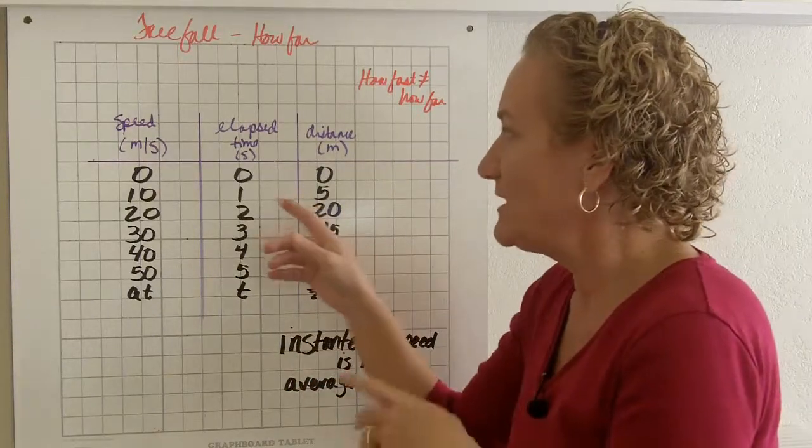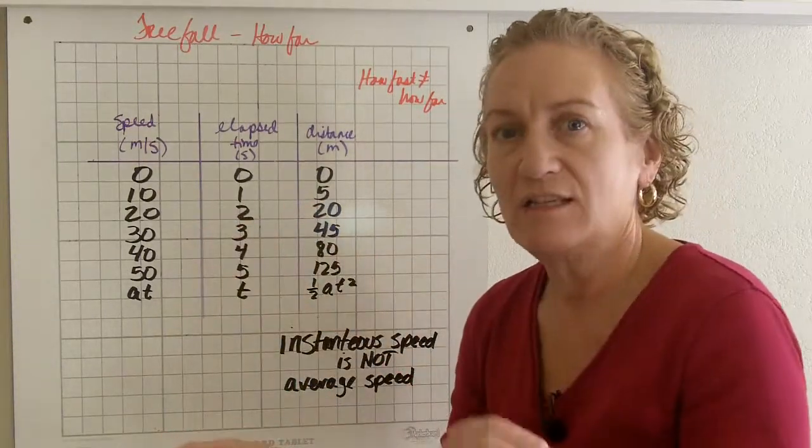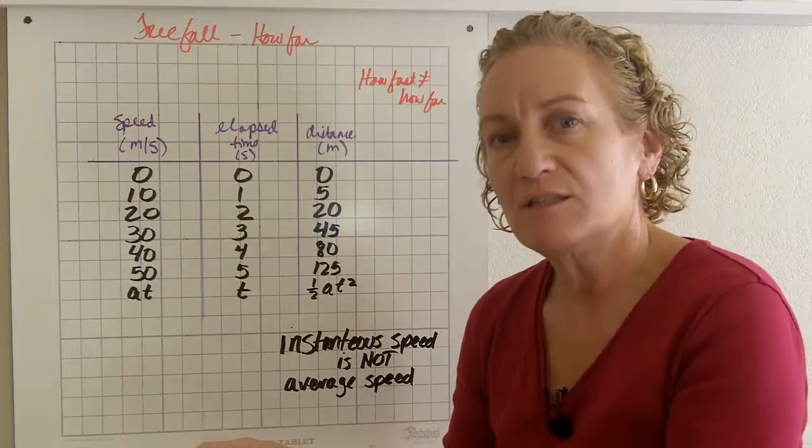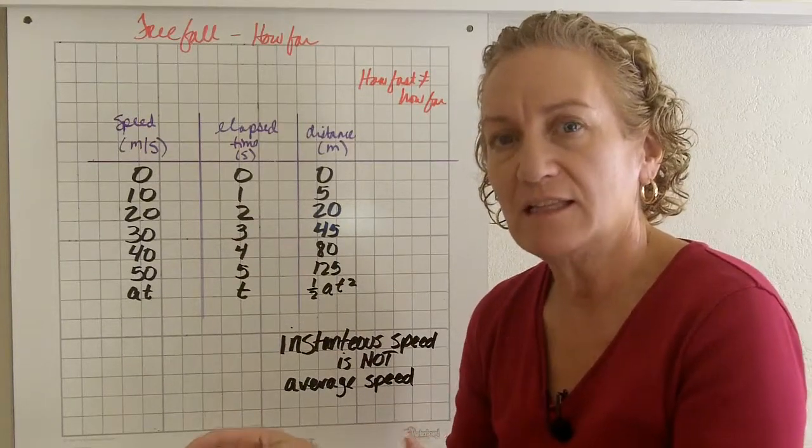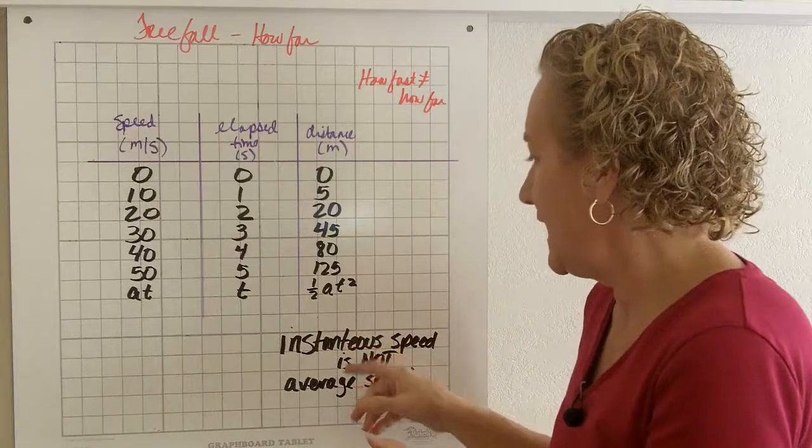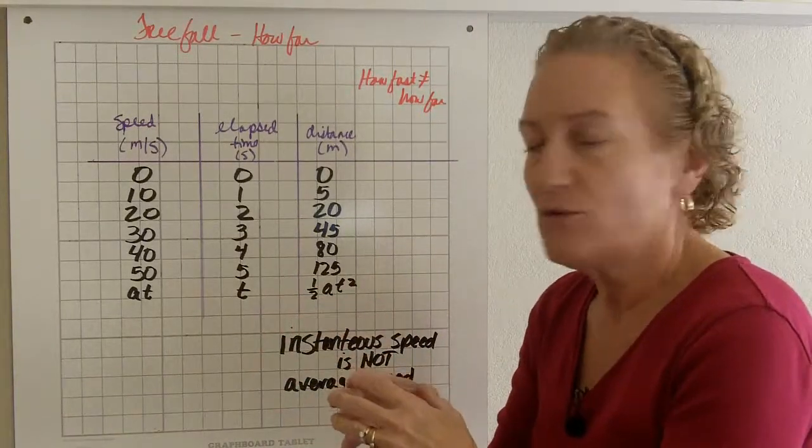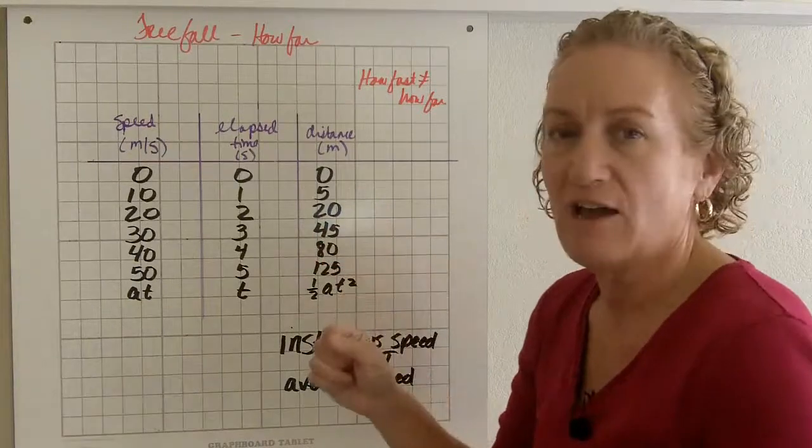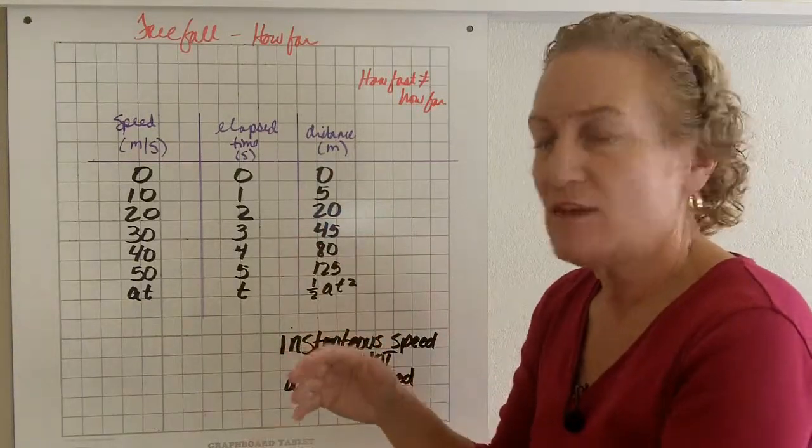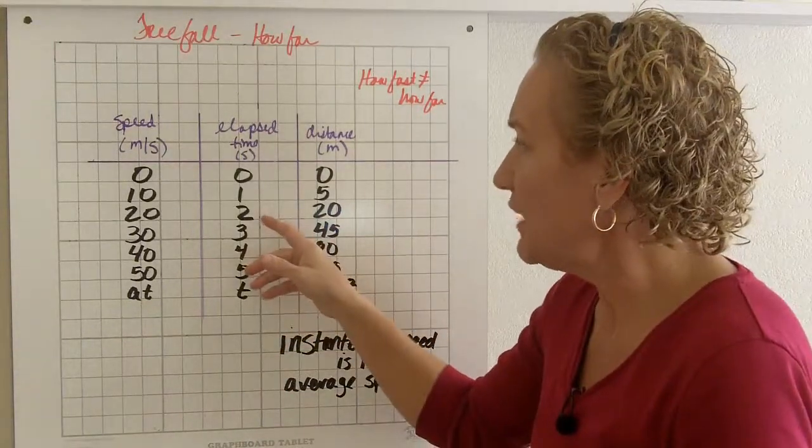But remember that at one second, 10 meters per second is her instantaneous speed. It's the speed that she's going in that tiny little instant of time. And instantaneous speed is not average speed. So if we average those two together, we'd find out that she's actually gone 5 meters. And you can do the math and continue on.